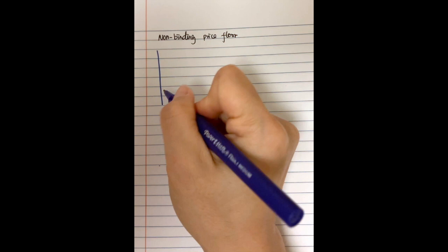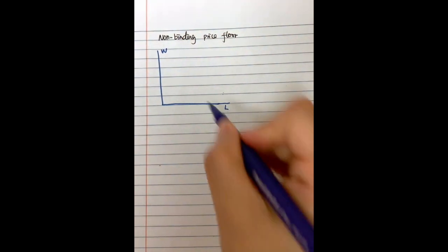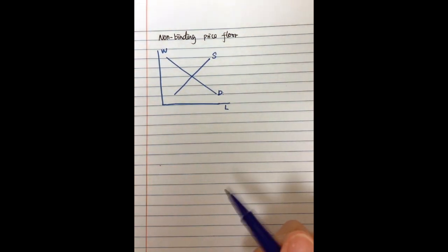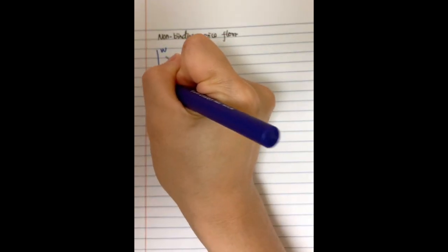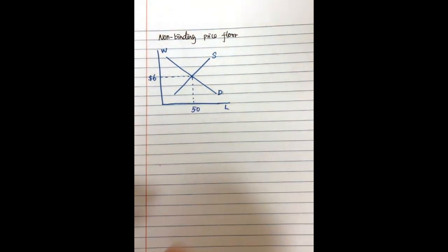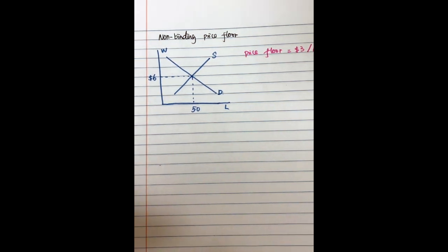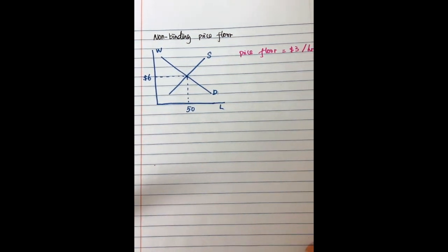Now, what is the non-binding price floor? For the non-binding price floor, I will use a similar example — still talking about the labor market. We have labor quantity on the horizontal axis and wage on the vertical axis, with a demand curve and supply curve. The equilibrium wage is $6 per hour and the equilibrium quantity is 50. But now the government imposes a price floor equal to $3 per hour.